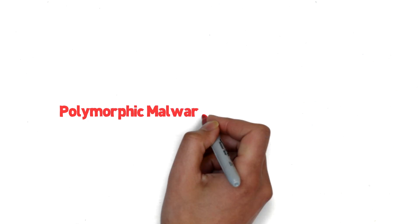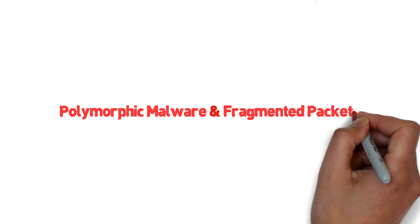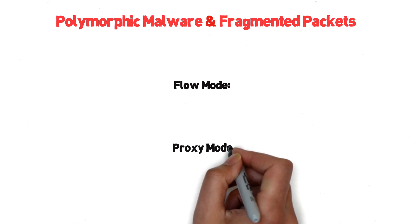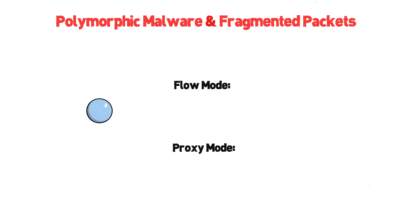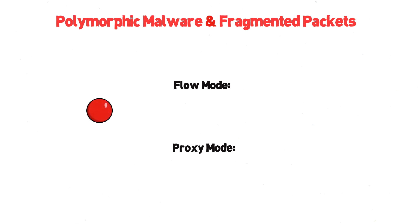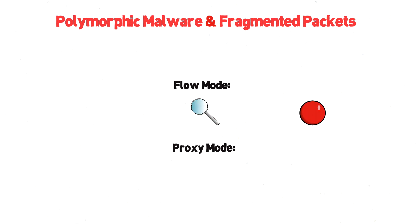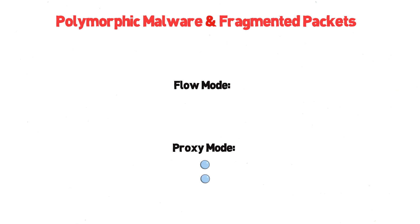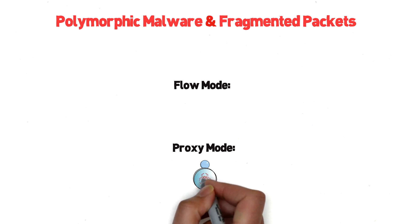Before we wrap up, there's bonus content I wanted to mention: polymorphic malware and fragmented packet evasion. Both of these techniques take advantage of packet-by-packet inspection, typically called flow mode on firewalls. Flow mode inspects each packet as it arrives and has a high rate of detection, but you run the risk of an attacker chunking or fragmenting packets in such a way that individual packets look benign — it's only when they're defragmented and put back together that you see the full picture. That's where proxy mode has a major advantage: next-gen firewalls in proxy mode grab and reconstruct all packets in a flow before inspecting and sending back to the client. This inspection is more accurate but requires more resources.